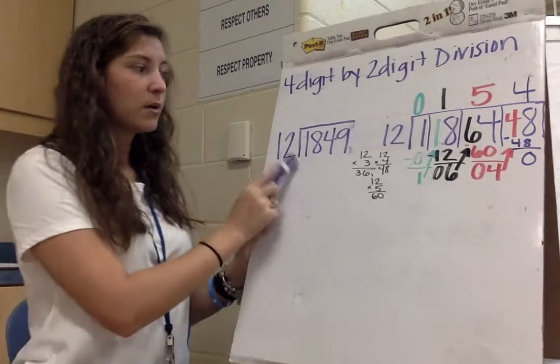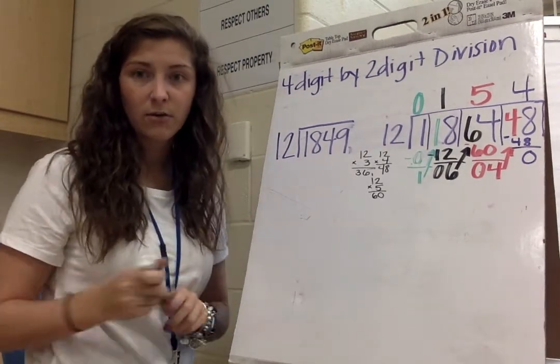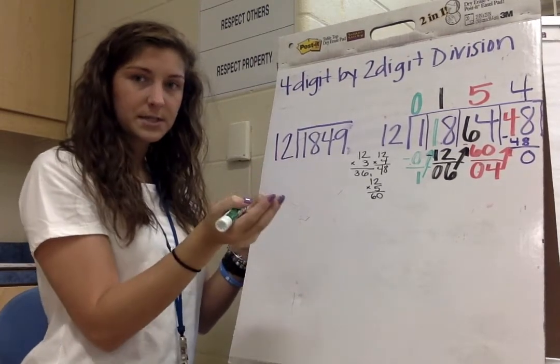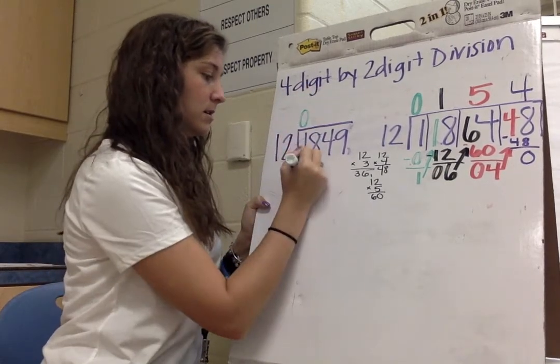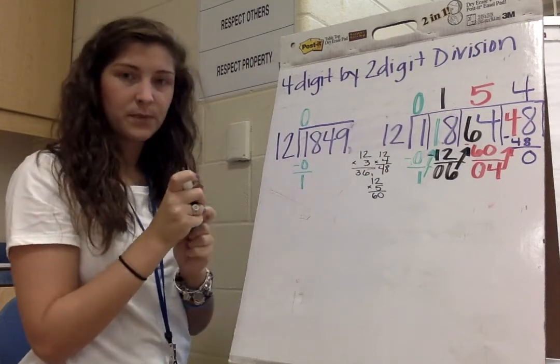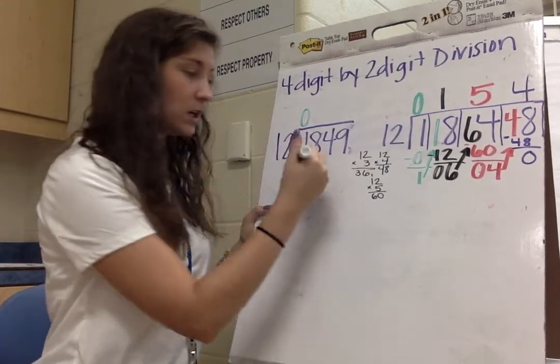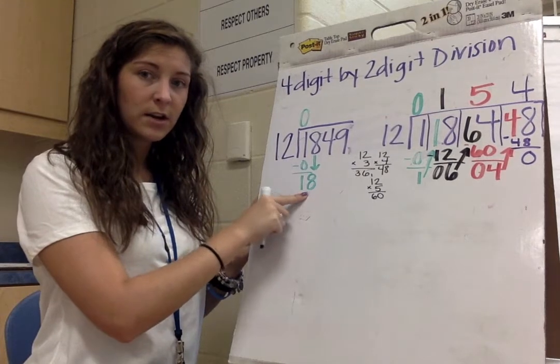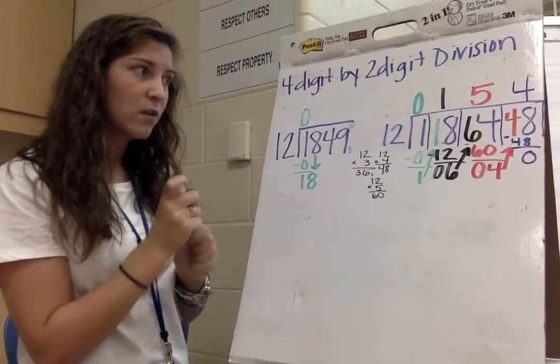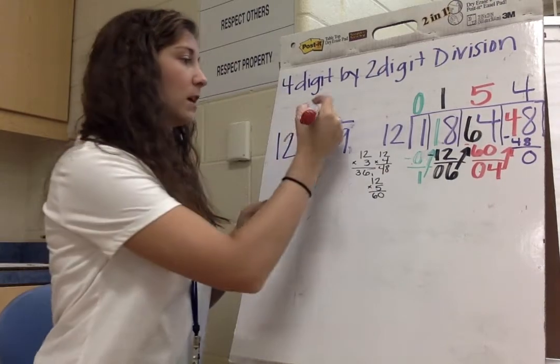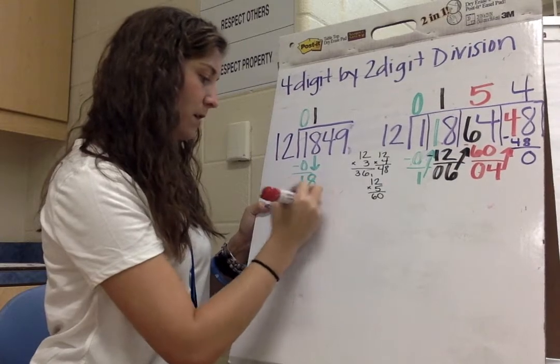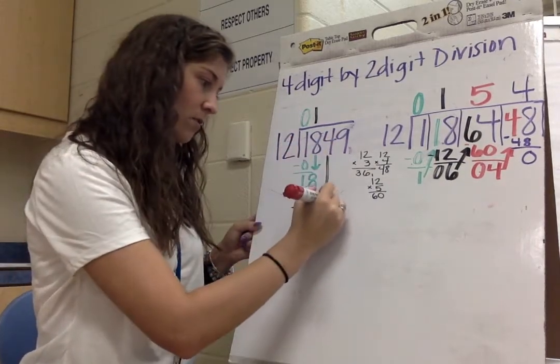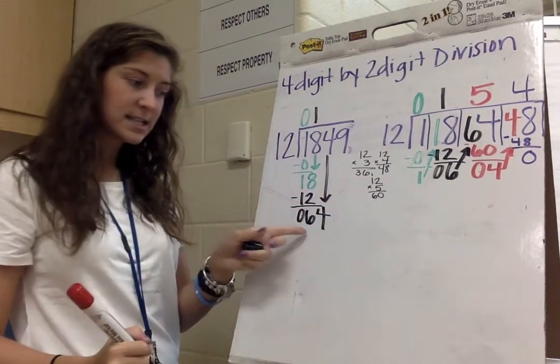Now, I'm going to show you the same problem just over here using the standard algorithm. I have to ask myself, how many times can 12 go into 1? Like we said, 12 times 1 is 12, so it can't go into 1 at all. 0, we subtract, there's a 1. Now, instead of carrying my 1 over, I'm going to bring my 8 down. So I still get the number 18 down here, and I still have to ask myself, how many times can 12 go into 18? Well, 12 can go into 18 one time. 1 times 12 is 12. When I subtract, I'm left with 6. I have to bring down my 4, and I still get the number 64.